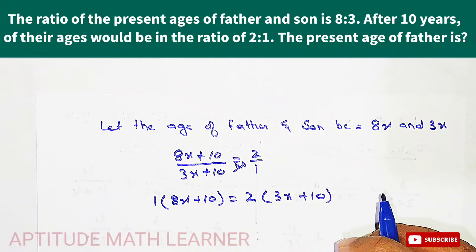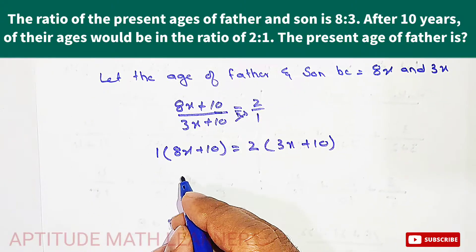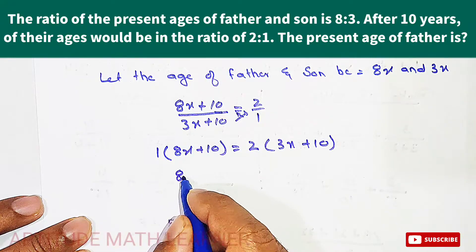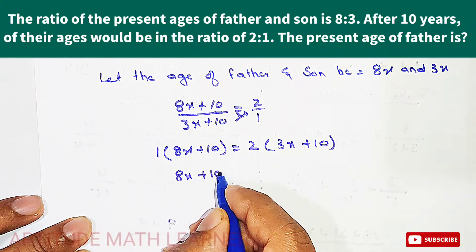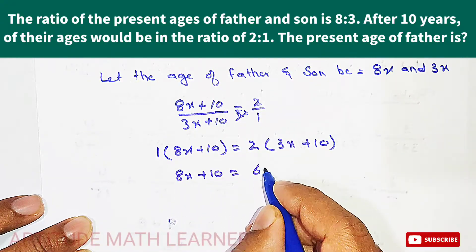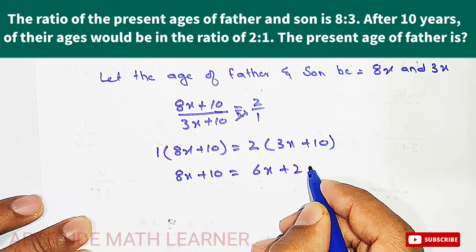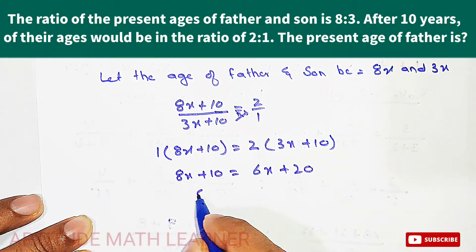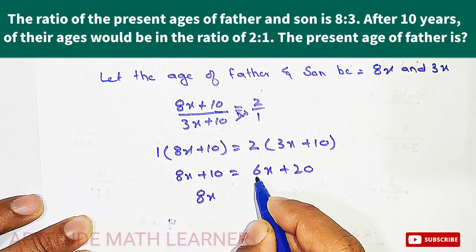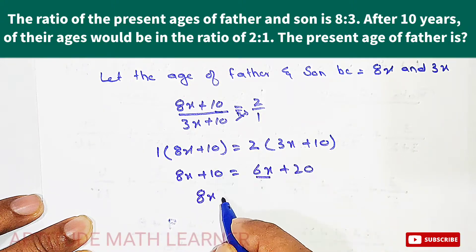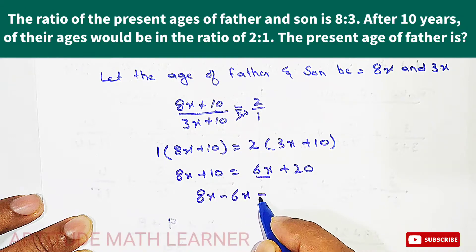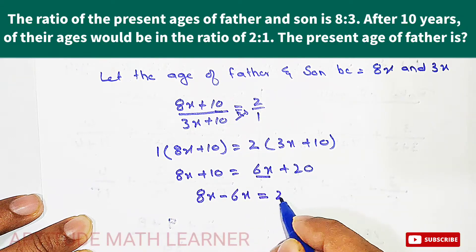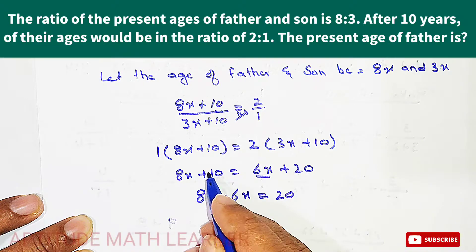So this becomes 8x plus 10 is equal to 6x plus 20. Now 8x and this 6x goes this side and becomes minus 6x. This is 20, so we write 20, and this is 10, and it goes this side. It becomes minus 10.